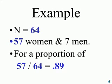So our n, our sample size, is 64. We had 57 women and only seven men. This gives us a proportion of females in the sample of 57 divided by 64, or 0.89.